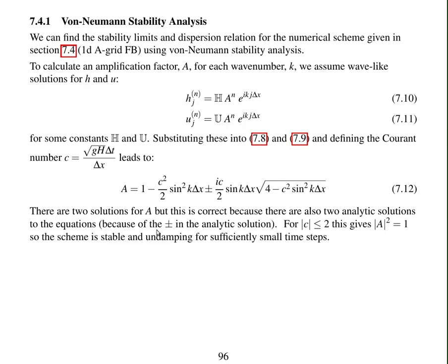If we assume that the Courant number is less than or equal to two, then this term here is always going to be greater than zero. So the square root is going to be real. And so this whole thing is going to be a complex number.